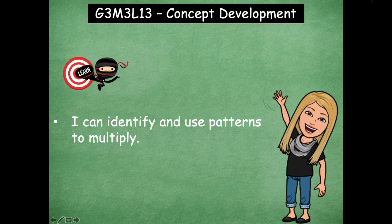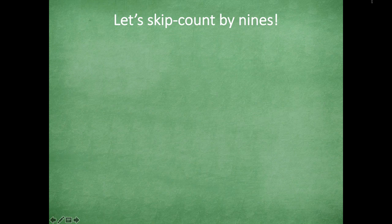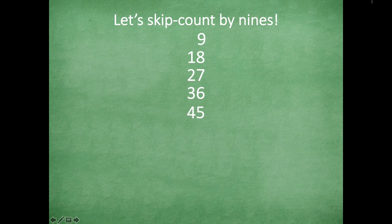Let's start by skip counting by nines. Here we have nine, and I'm going to do this vertically, so go ahead and count with me as we go through: nine, eighteen, twenty-seven, thirty-six, forty-five, fifty-four, sixty-three, seventy-two, eighty-one, ninety.